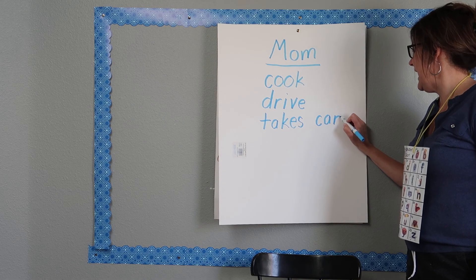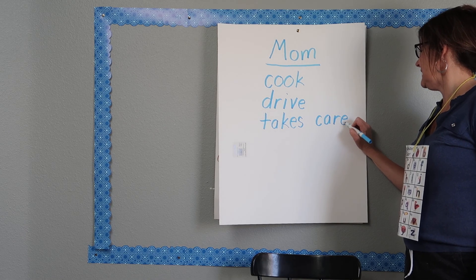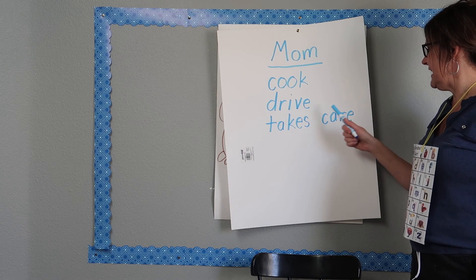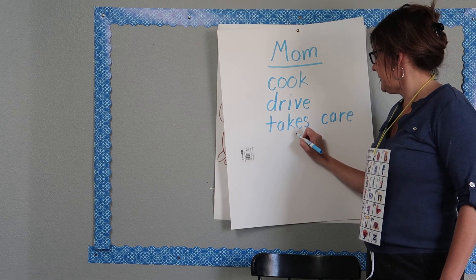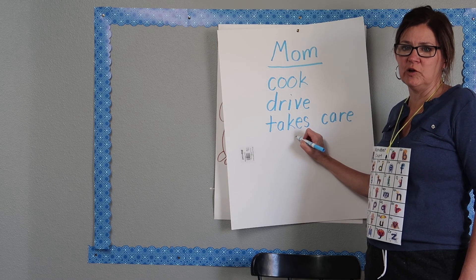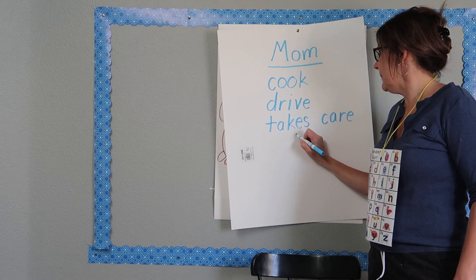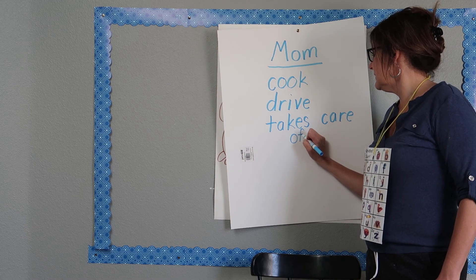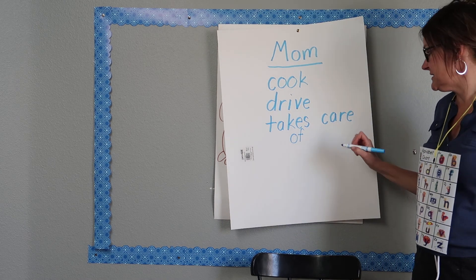Care. Oh, another magic jumping E that makes the vowel say its name. K-A-R. Care. Takes care. And then down here, I'm going to kind of scoot the of word in a little bit. So it looks more like a poem. Of is just O-F. I'm remembering my meatball spaces. And me.